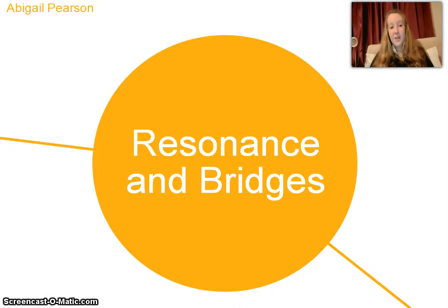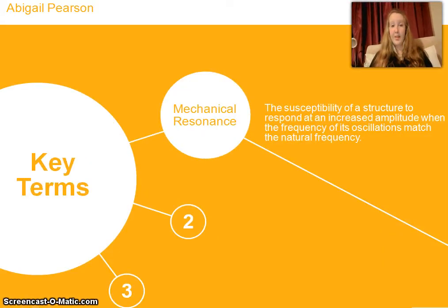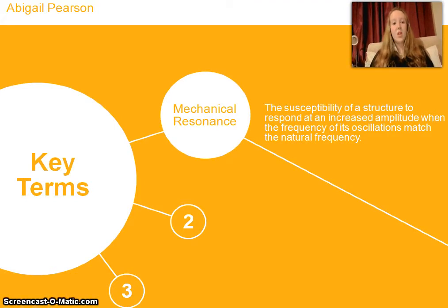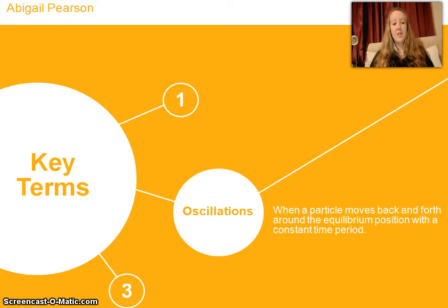Many bridges have fallen down due to resonance, or to be more precise, mechanical resonance. This is the susceptibility of a structure to respond at an increased amplitude when the frequency of its oscillations matches the natural frequency. Structures like bridges can start to oscillate for many reasons, which I'll go on to in a moment.